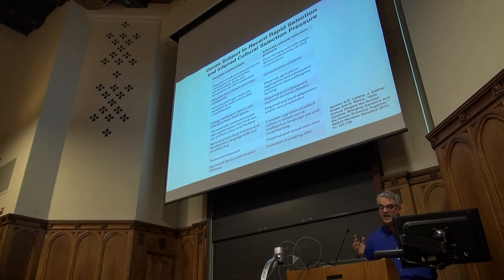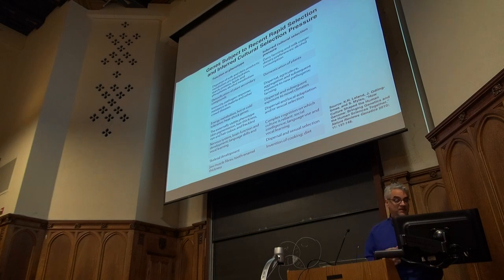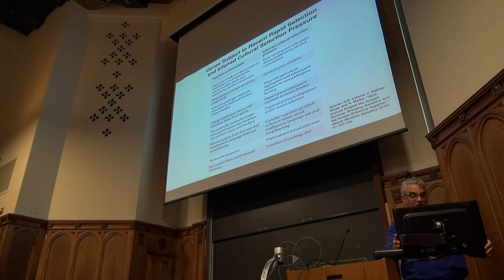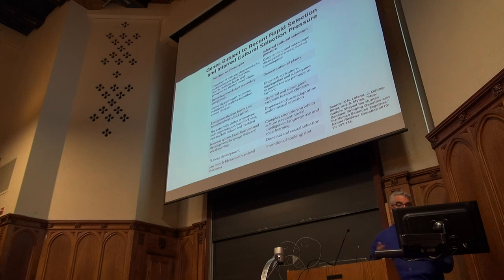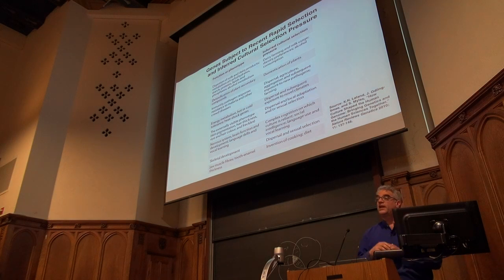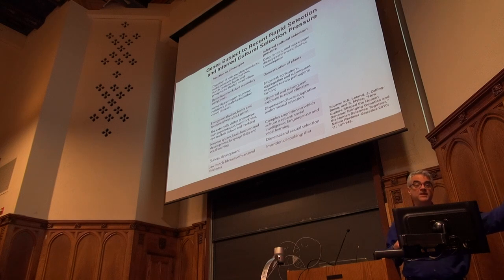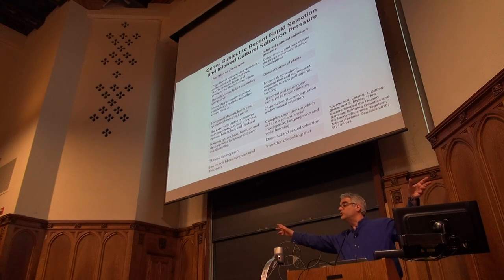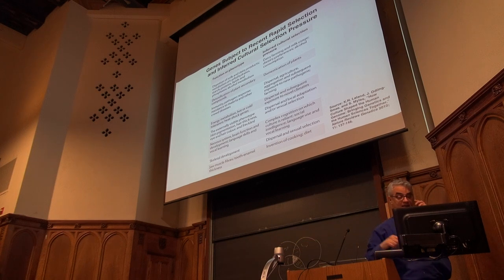This table, taken from your readings, summarizes many of the examples we've been discussing. On the left we have functions or phenotypes, and on the right we have inferred cultural selection pressures — why do we have the bodies and behaviors that we do, and what cultural and historical forces may have contributed?